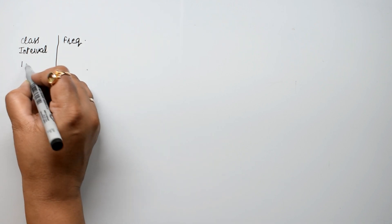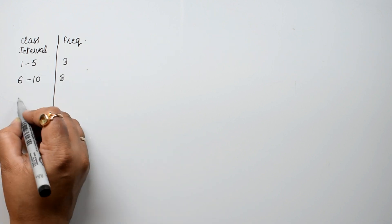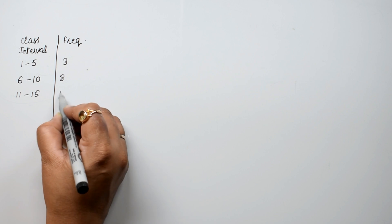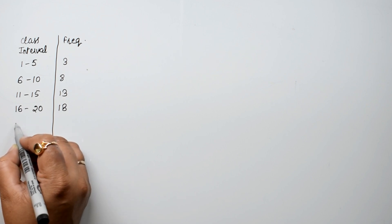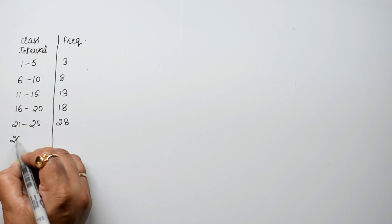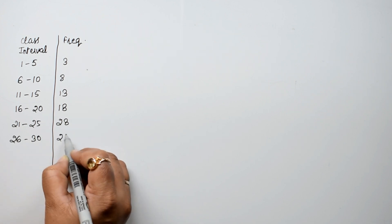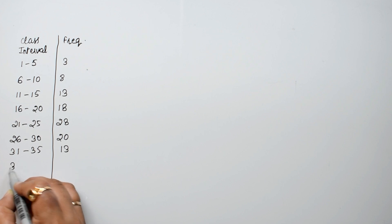The class intervals and frequencies are: 1 to 5 is 3, 6 to 10 is 8, 11 to 15 is 13, 16 to 20 is 18, 21 to 25 is 28, 26 to 30 is 20, 31 to 35 is 13, 36 to 40 is 8, 41 to 45 is 6, and 46 to 50 is 4.